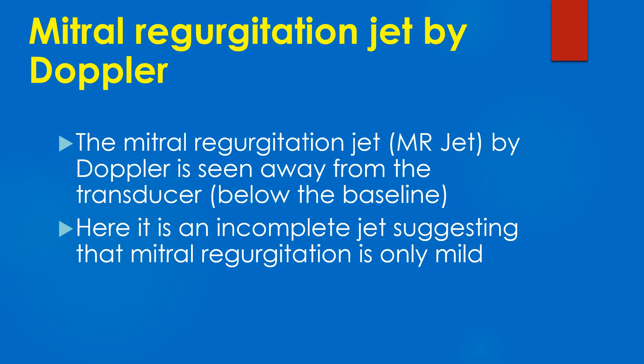The mitral regurgitation jet by Doppler is seen away from the transducer, that is below the baseline. It is an incomplete jet in this case, suggesting that mitral regurgitation is only mild.